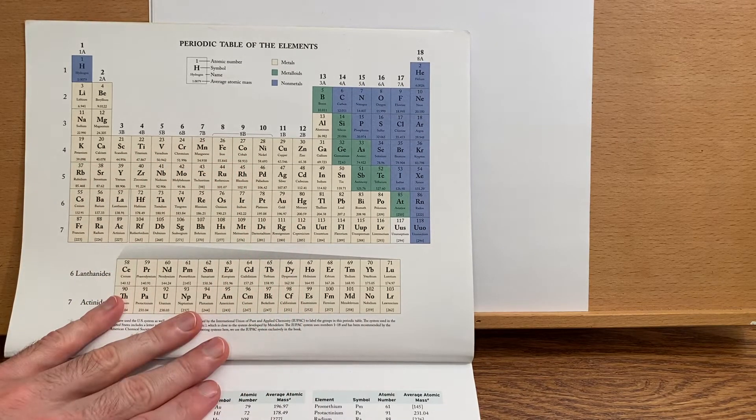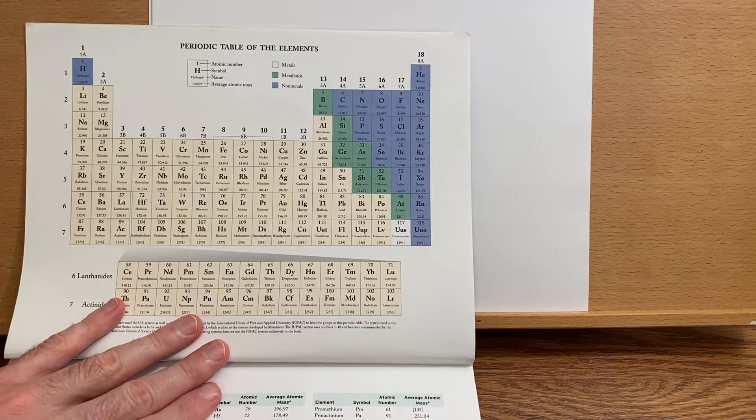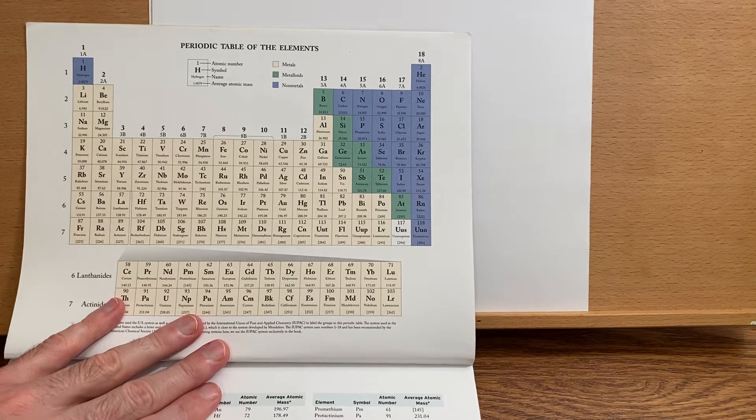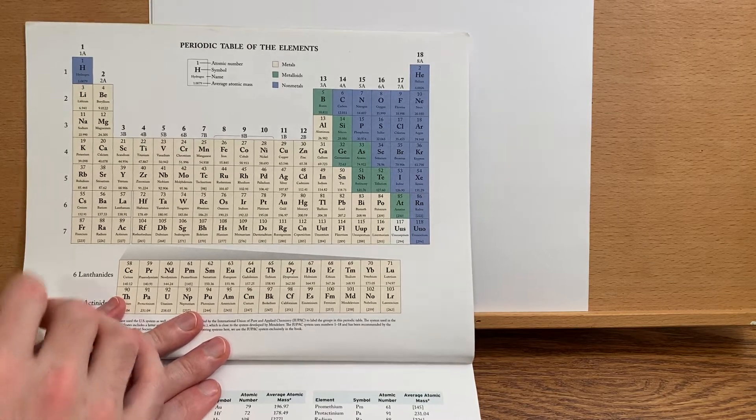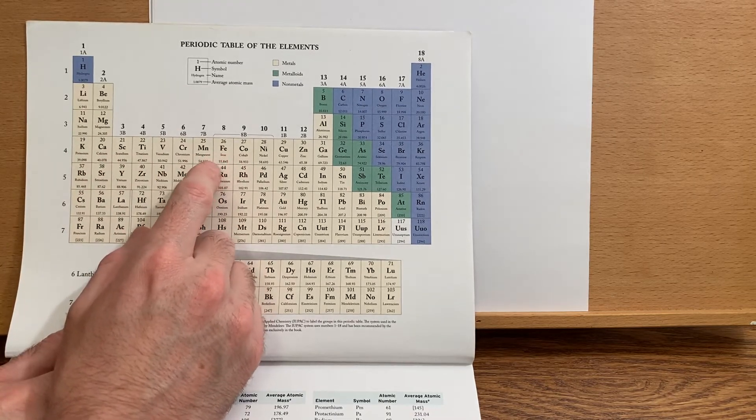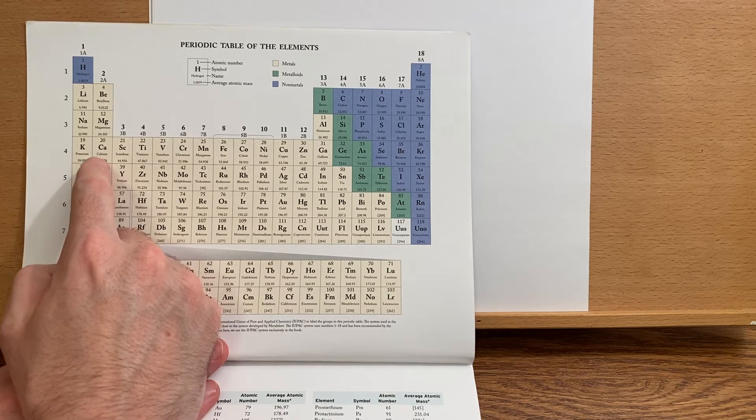Now what happens when we have a transition metal ion? Say iron 2 plus, it's a typical ion. Where do the electrons come from? Do they come from the 4s or do they come from the 3d? Well, the 4s is the outermost shell, so they come from there.